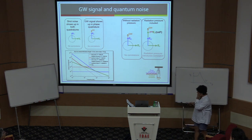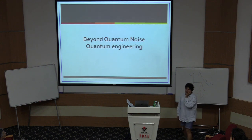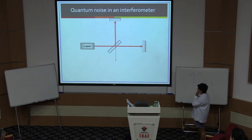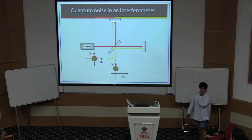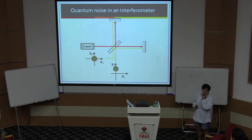So how do we do better? Beyond this quantum noise, we have to do some quantum engineering. Back to the interferometer — you already know the vacuum state comes in, the vacuum state comes out, superposes with the gravitational wave signal, and that gives us the quantum noise. Now, imagine that instead of putting a vacuum state into the open port, I could put a squeezed state in. What might that squeezed state look like?